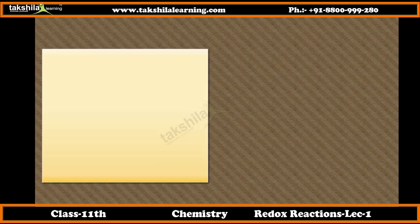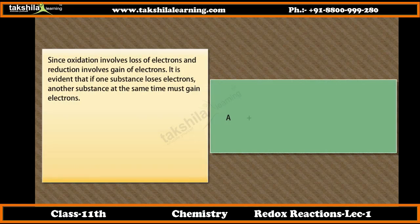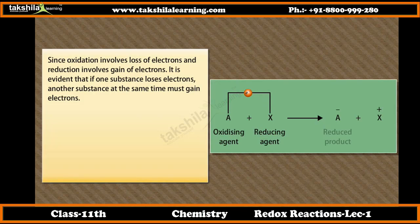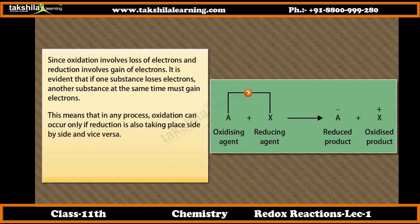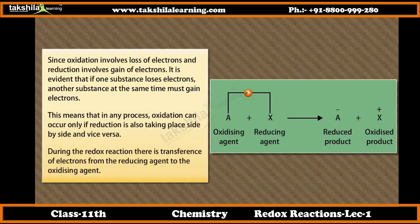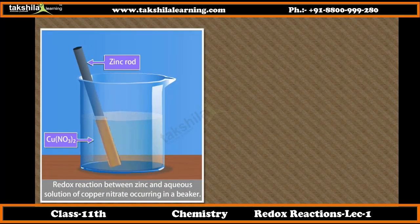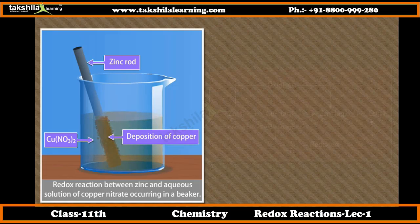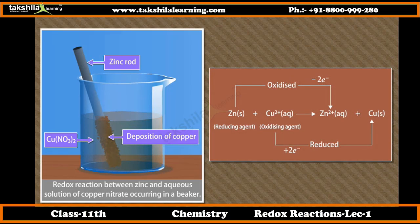Simultaneous occurrence of oxidation and reduction. Since oxidation involves loss of electrons and reduction involves gain of electrons, if one substance loses electrons, another substance at the same time must gain electrons. This means oxidation can occur only if reduction is also taking place side by side, and vice versa. During the redox reaction, there is transference of electrons from the reducing agent to the oxidizing agent. In this reaction, zinc atoms lose electrons and are oxidized to zinc ions, whereas cupric ions gain electrons and are reduced to copper atoms. Cupric ions act as oxidizing agent and zinc atoms act as reducing agent.